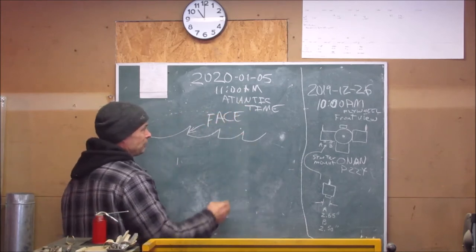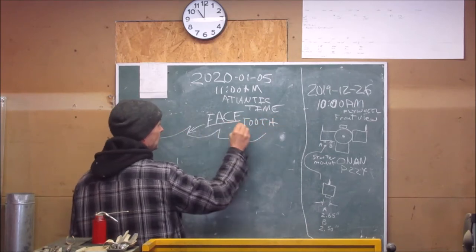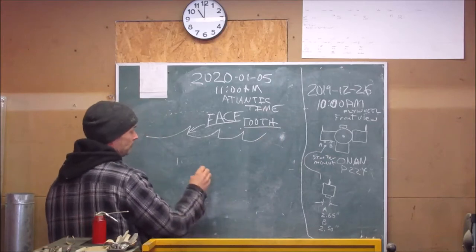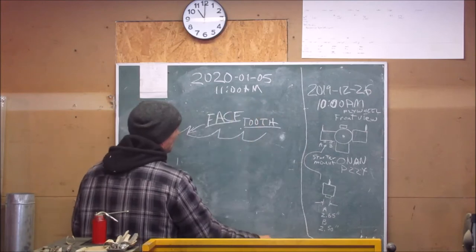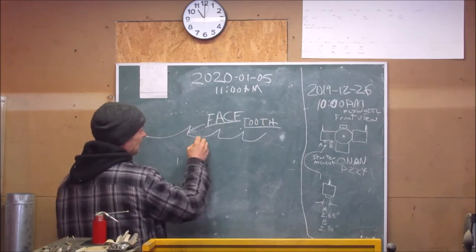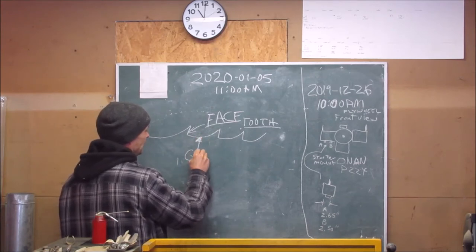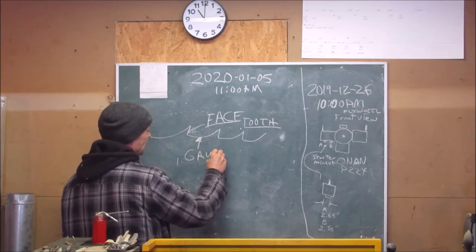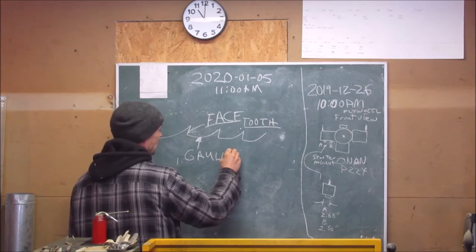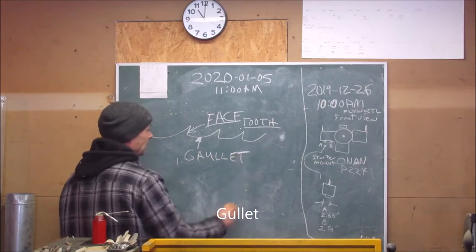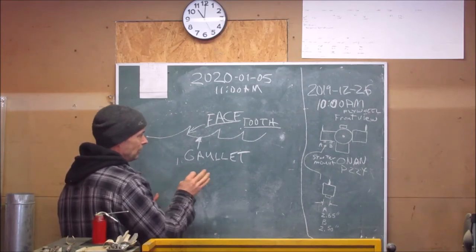This is the face, the face of the tooth. And this portion is the gullet. I think that's how you spell it. It's the gullet.